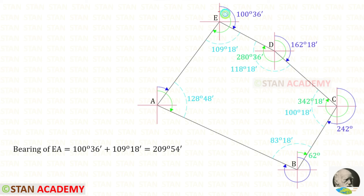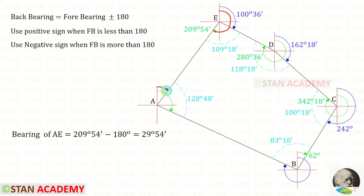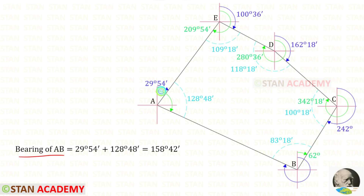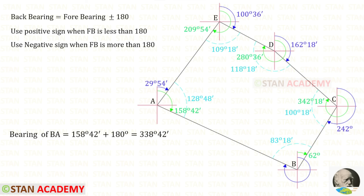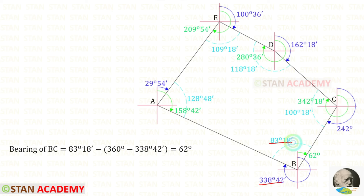Now let us find the fore bearing of EA by adding the relevant angles, giving 209 degrees 54 minutes. Since it is more than 180 degrees, the back bearing AE = 209° 54' − 180° = 29 degrees 54 minutes. Next, the fore bearing of AB is found by adding the relevant angles, giving 158 degrees 42 minutes. Since this is less than 180 degrees, the back bearing BA = 158° 42' + 180° = 338 degrees 42 minutes.